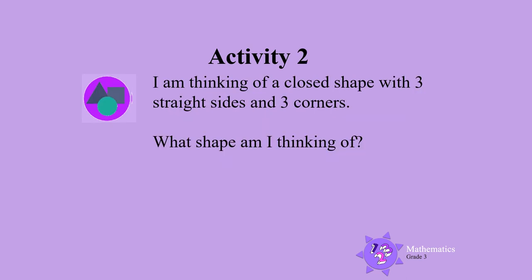Activity 2. I am thinking of a closed shape with 3 straight sides and 3 corners. What shape am I thinking of? Here are the 3 straight sides and when we connect the 3 straight sides, they form a closed shape with 3 straight sides. What is this shape called? It's a triangle.